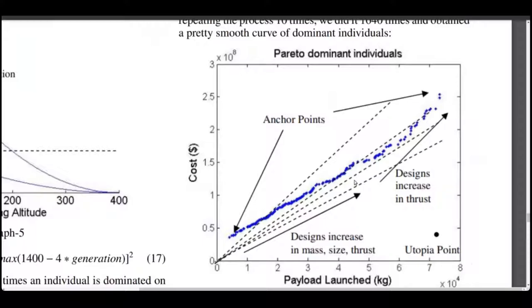Now, from this graph, we can easily see the utopian point, i.e., the point whose cost to mass ratio is the lowest. This is the optimal model that we were aiming for.